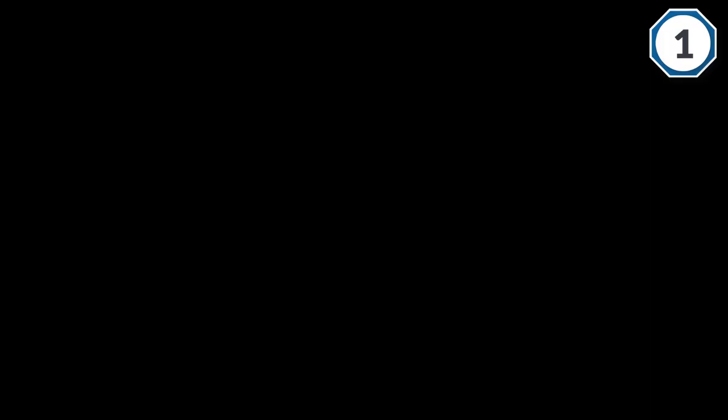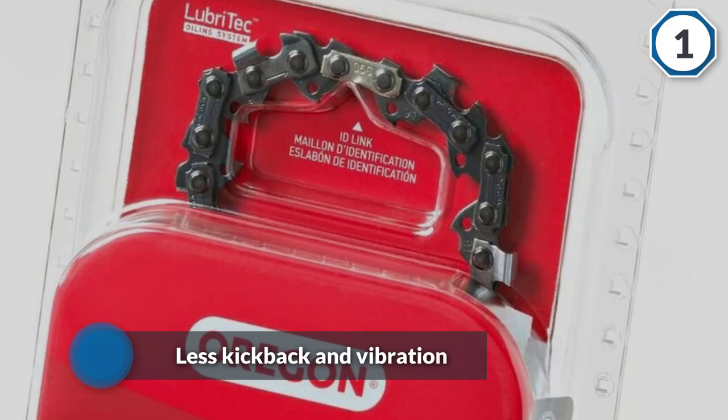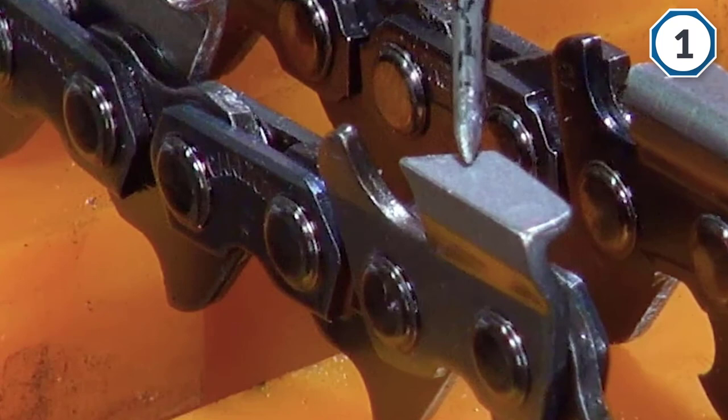The 16-inch 91VG low-profile chain features 56 drive links and its twin cutting corners deliver exceptional performance. Plus it features semi-chisel teeth which allow it to tackle hardwood with ease while adding durability and easy maintenance.